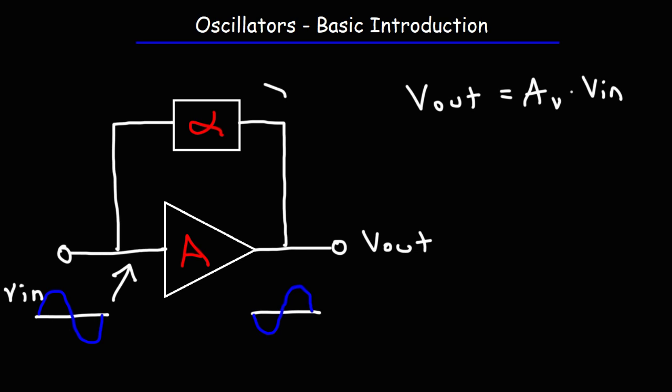Alpha is the attenuation factor. As some of the energy goes back to the input, we get a voltage called Vf. Vf is equal to the attenuation factor times the output voltage.